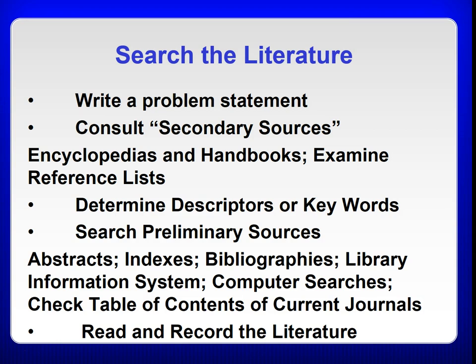Secondary sources are sources of data in research in which an author has evaluated and summarized previous research. Some examples are encyclopedias, handbooks, and reference lists. Primary sources are the first-hand source of data in research, or the original study. They are ultimately the most valuable for the research in that the information is first-hand. Most primary sources in a literature review are journal articles.